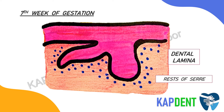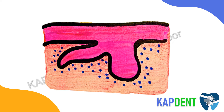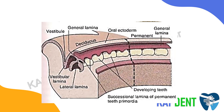The remnants of the dental lamina which persist are referred to as the rests of Serres. Certain points or plaques develop in the dental lamina — 10 in each arch — corresponding to the deciduous teeth.